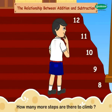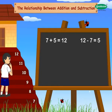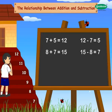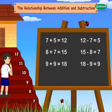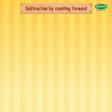How many more steps are there to climb? Seven plus five equals twelve; twelve minus seven equals five. Some more examples: eight plus seven equals fifteen; fifteen minus eight equals seven. Nine plus nine equals eighteen; eighteen minus nine equals nine. Twelve plus eight equals twenty; twenty minus eight equals twelve. Subtraction by counting forward.